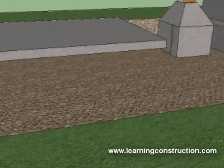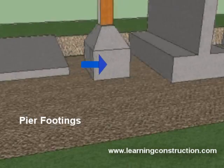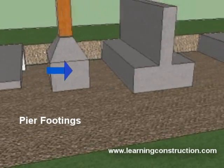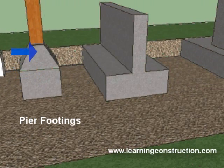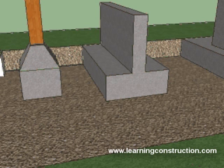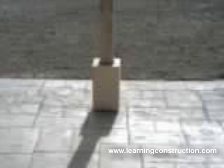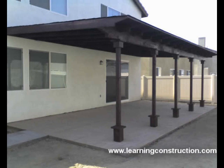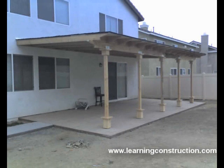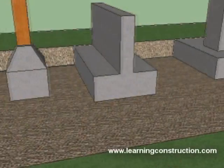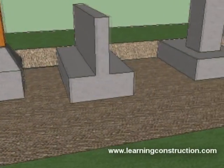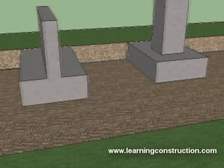The next type will be the piers. Piers are very common as well in residential homes. They're used for the porch and entrance, but they could also be used for trellises, patio covers, or any other type of structure that has a single roof and doesn't really have walls — so in other words, it's just a roof structure.